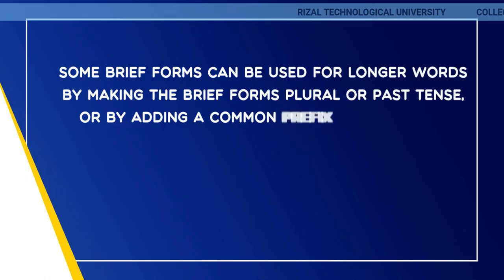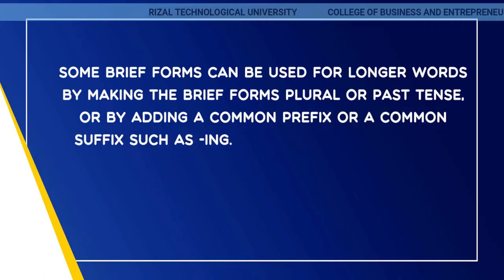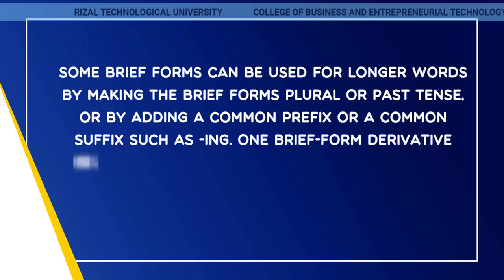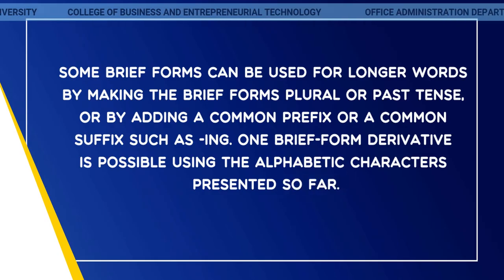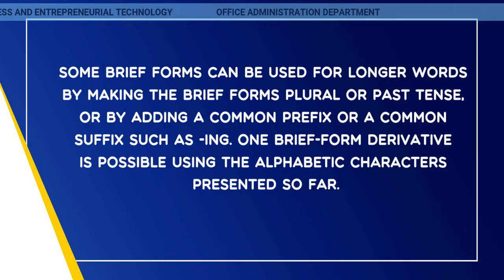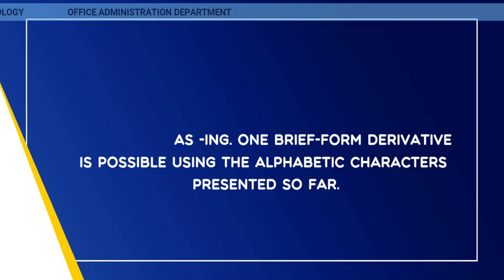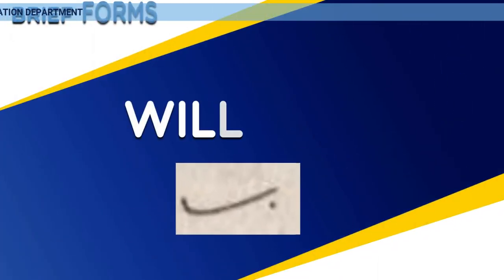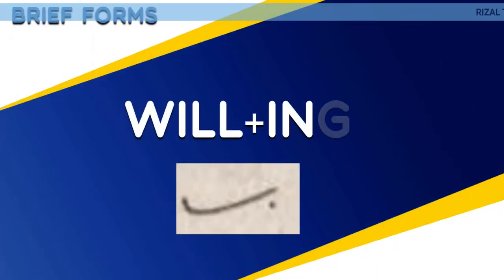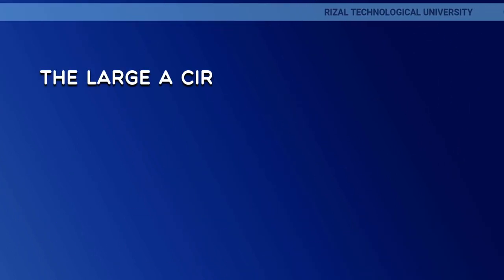Some brief forms can be used for longer words by making them plural or past tense, or by adding a common prefix or suffix. One brief form derivative is possible using the alphabetic characters represented so far. For example, willing is written using the L-stroke for will, plus a dot for -ing.